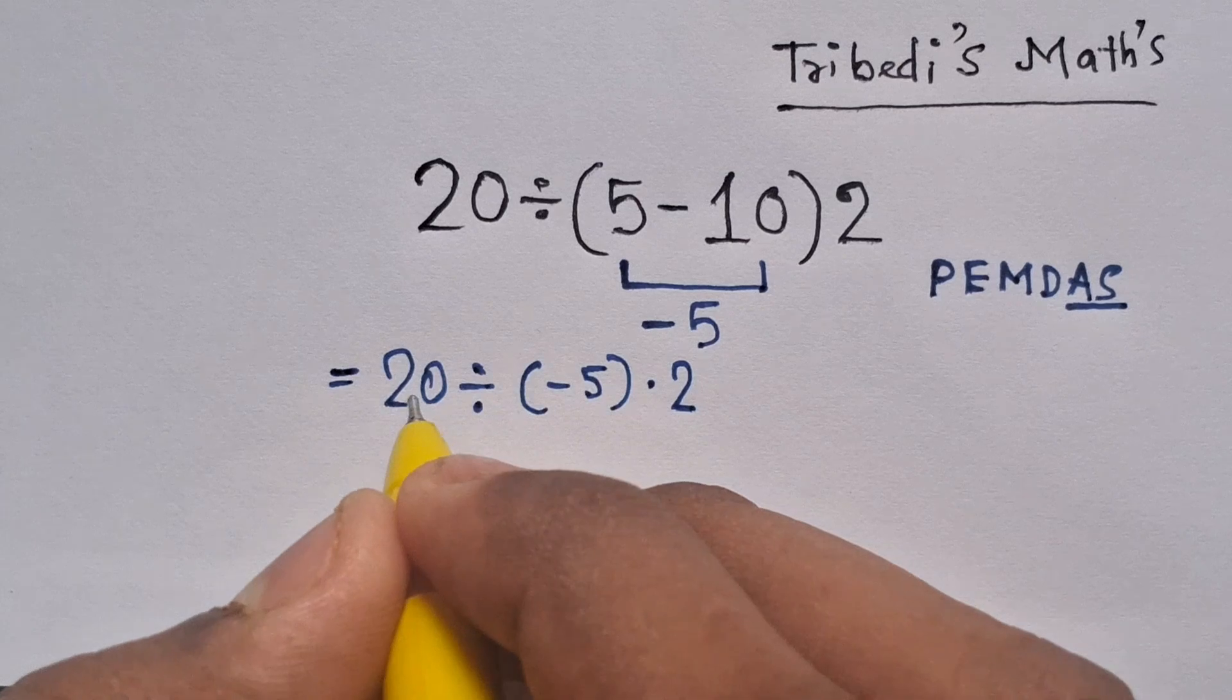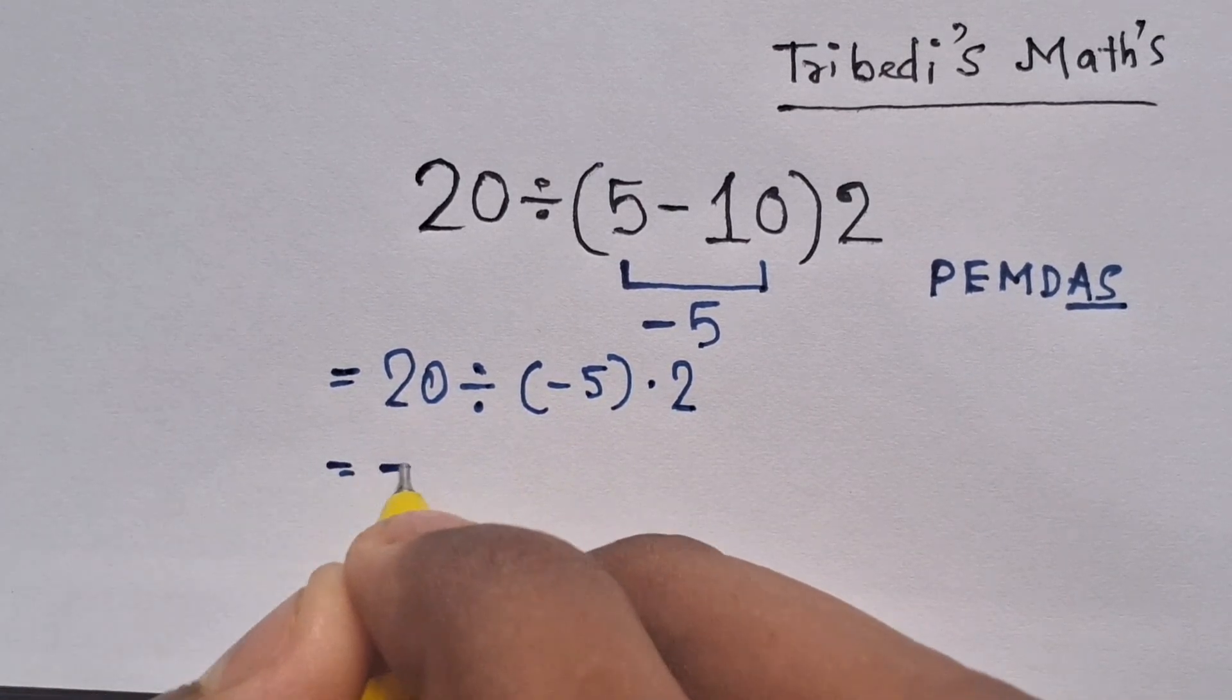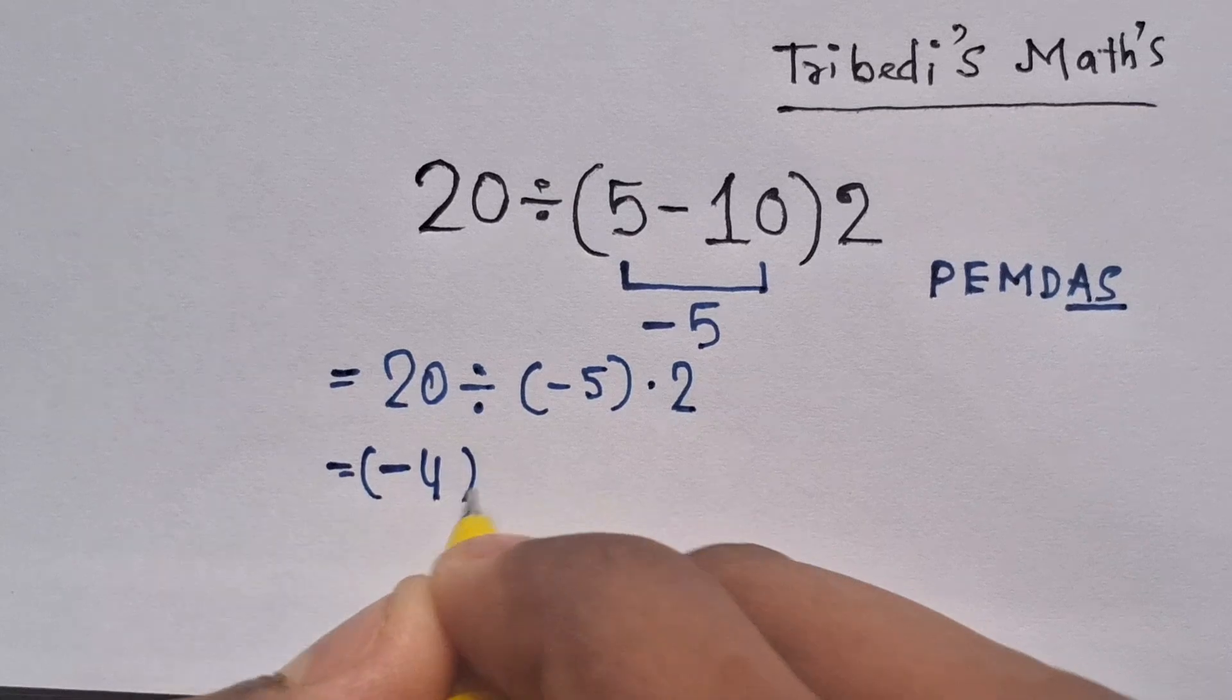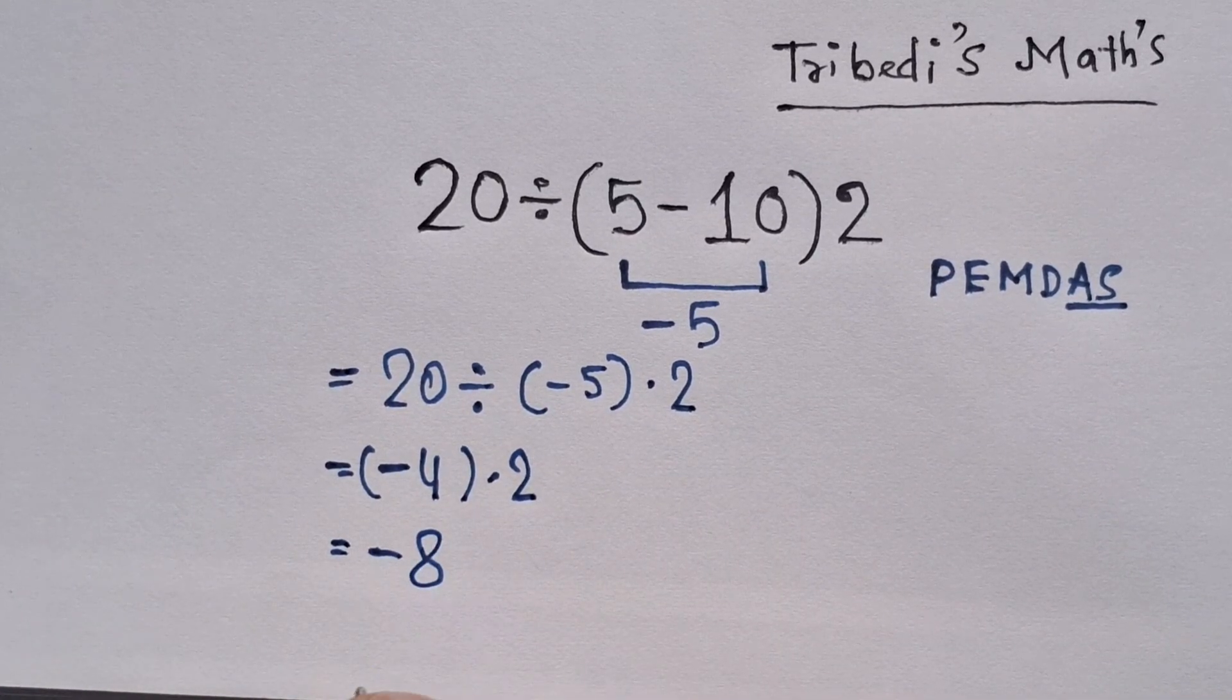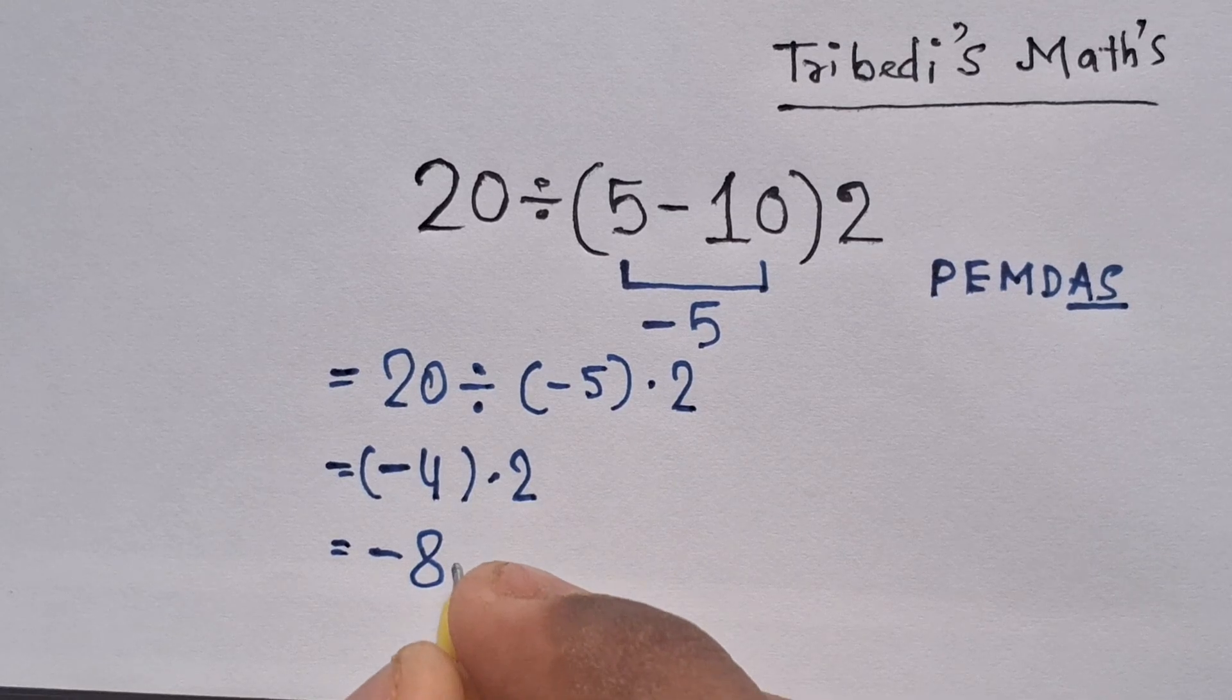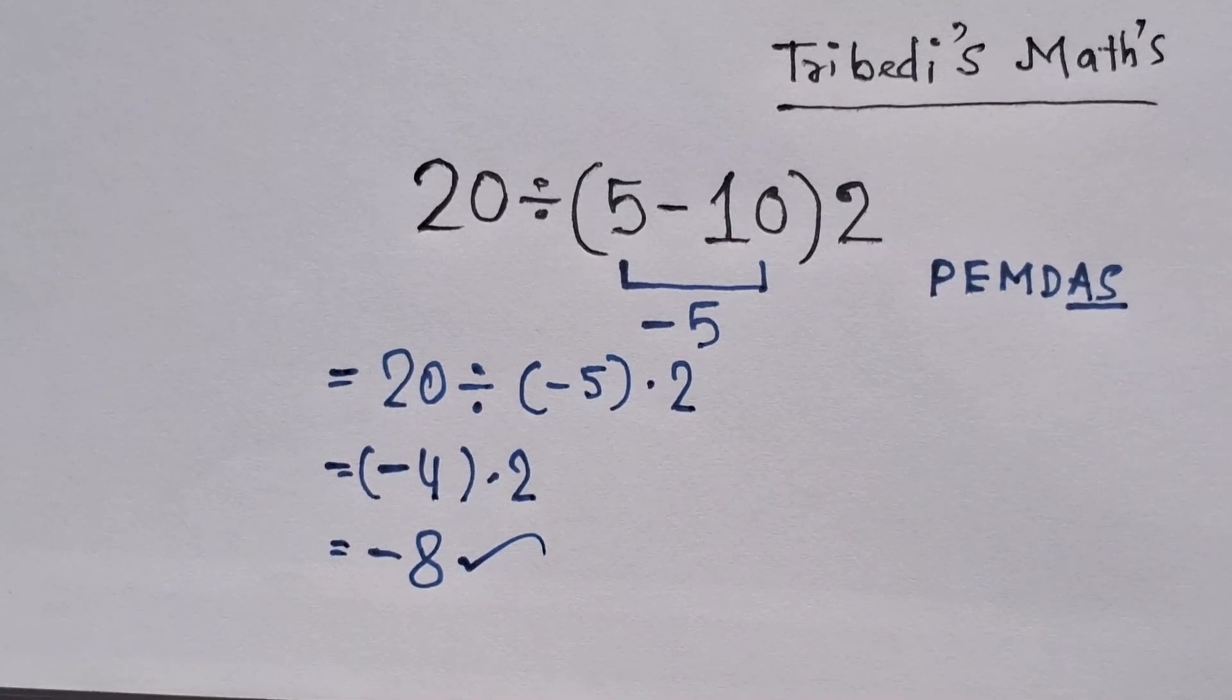Then we have to solve from left to right. So division first: 20 divided by minus 5 equals minus 4 times 2. Minus 4 times 2 equals minus 8. So our final answer is minus 8. Hit like and subscribe our channel for more interesting math questions.